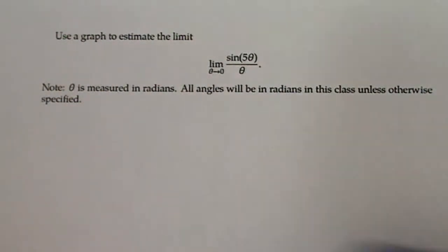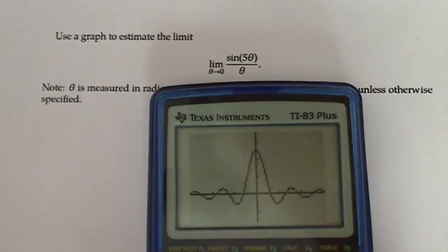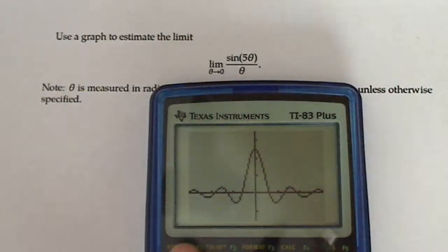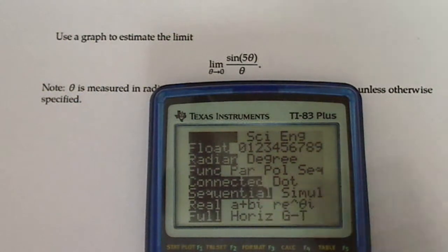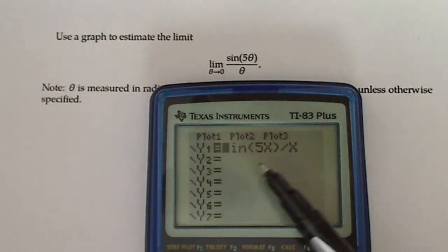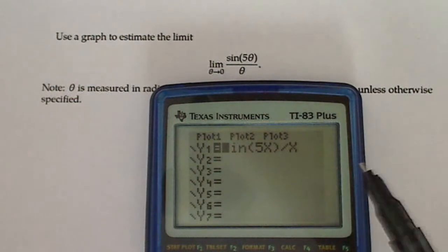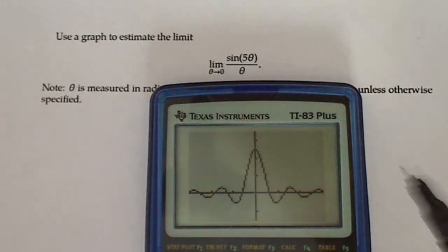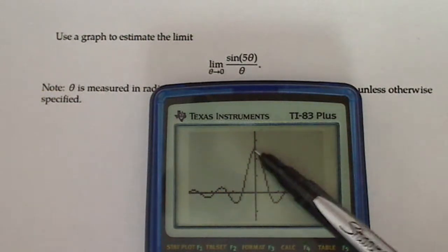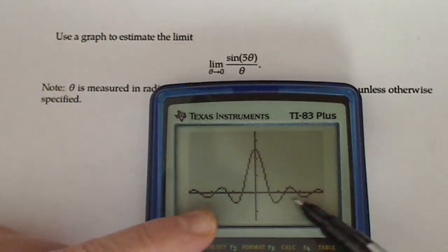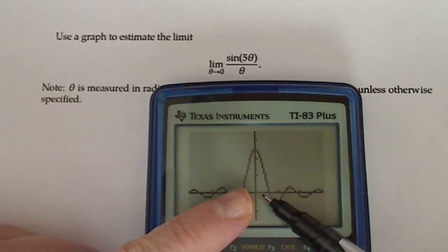The first thing you do is you take out your trusty calculator and you graph it. So let's check my mode. I'm in radian mode. And here's my function sine of five theta over theta and then I graph it. So you can see that my graph looks like it's tending towards one place as I come close to theta equals zero.